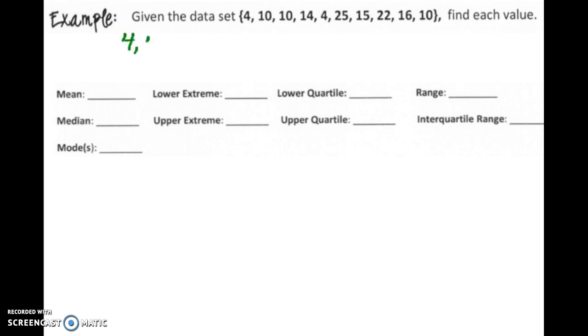So I'm going to start ordering least to greatest, and I'm going to go 4, 4, and you might want to cross off as you go just so you can keep track. 10, 10, there's another 10, so then I'm going to cross those off. 14, 15, 16, 22, and 25.